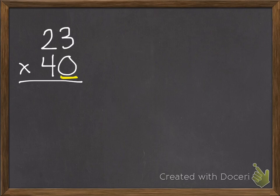So first of all, we're going to multiply our ones. So I have zero ones times 23, there at the top. So if I have zero 23s, I'm just going to have zero.